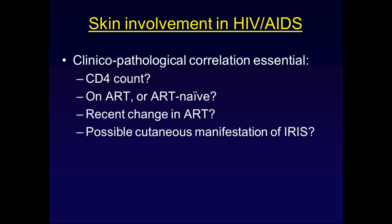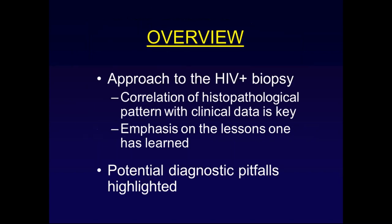As with any aspect of dermatopathology, clinical pathological correlation is utterly essential, particularly in the context of HIV AIDS. What you need to know from your clinical colleagues includes: what is the patient's CD4 count? Is he or she on antiretroviral therapy or are they ART naive? Has their medication changed, which could indicate an adverse drug reaction? And when patients are on antiretroviral therapy and present with certain skin lesions, we have to ask whether this could be a manifestation of immune reconstitution inflammatory syndrome.